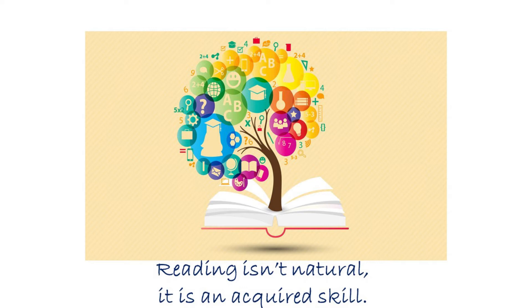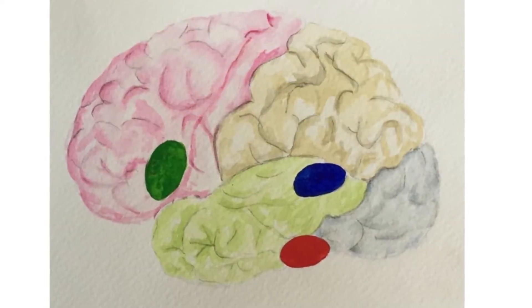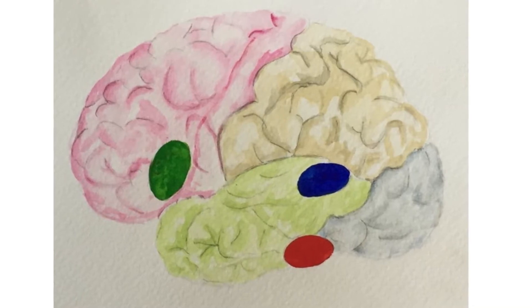It's something you need to learn, and for that you need different parts of your brain to work together to enable the child to comprehend what they are reading.